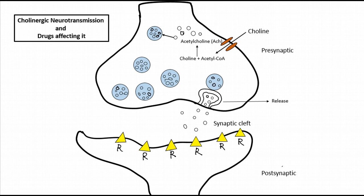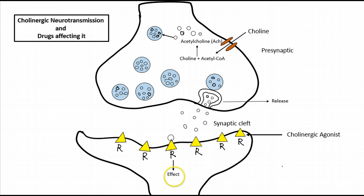The next important step is the action of acetylcholine on receptors. As soon as acetylcholine binds to a receptor, it produces an effect. The effect depends on the type of receptor stimulated: muscarinic receptors (M1, M2, M3, M4, M5) or nicotinic receptors — NM at the neuromuscular junction and NN at the autonomic ganglia.